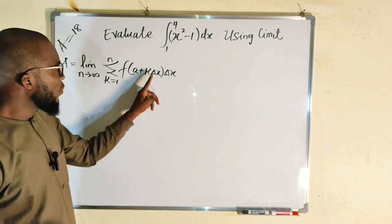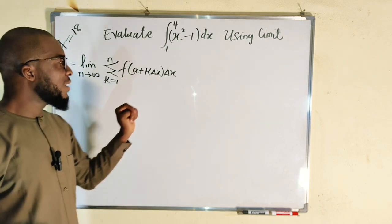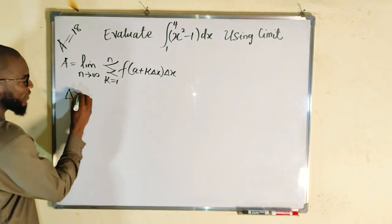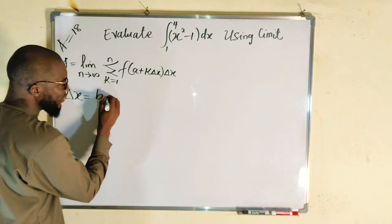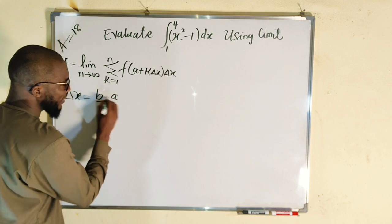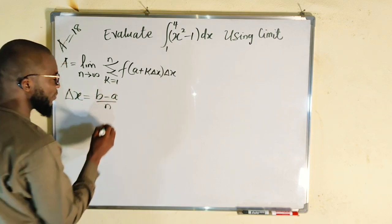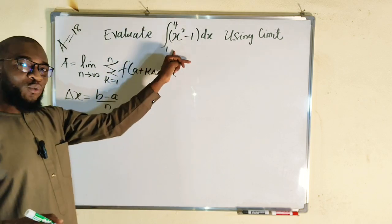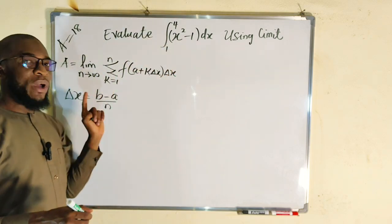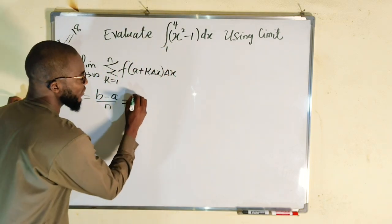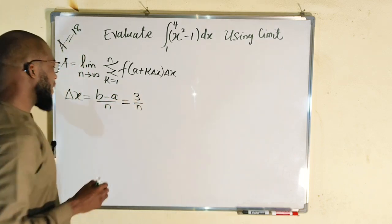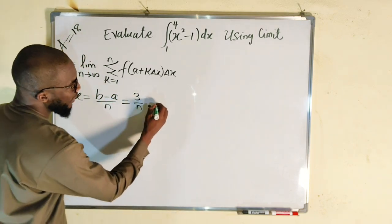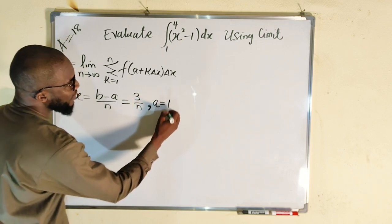We need a and we also need delta x. Delta x is equal to the upper limit b minus the lower limit a, divided by n. Here b equals 4 and a equals 1, so 4 minus 1 is 3. Therefore delta x equals 3 divided by n. And we know that a, the lower limit, is equal to 1.